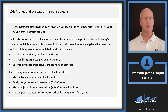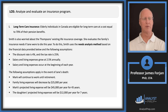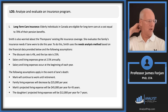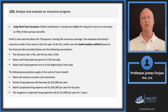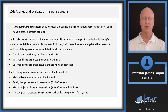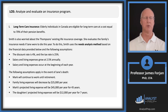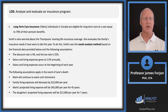Analyst Smith is worried about their existing life insurance coverage and evaluates the family's insurance needs if Jane were to die this year, using the needs analysis method. Assumptions: discount rate 4%, tax rate 25%, salary and living expenses grow at 2.5% annually. Salary and living expenses occur at the beginning of each year — that's just a time value of money convention.